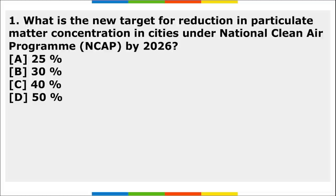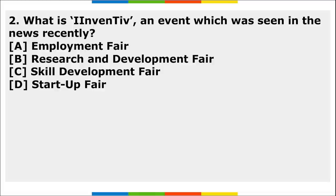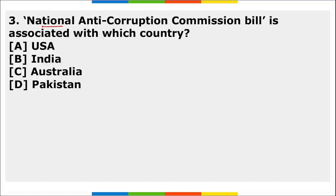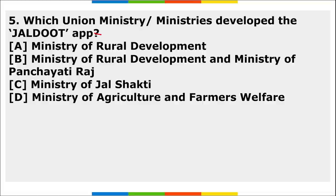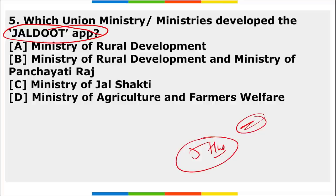Now it's time for homework. Five questions: 1) What is the new target for reduction in particulate matter (PM) concentration in cities under the National Clean Air Program by 2026? 2) What is 'Inventive' — recently seen in the news? 3) Which country is the Third National Anti-Corruption Commission Bill associated with? 4) In which state is the Tamiraparani River located? 5) Jaldut app was developed by which ministry?